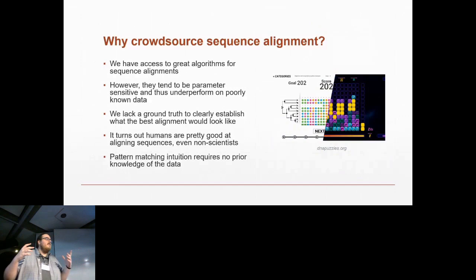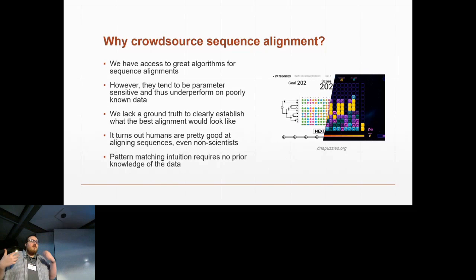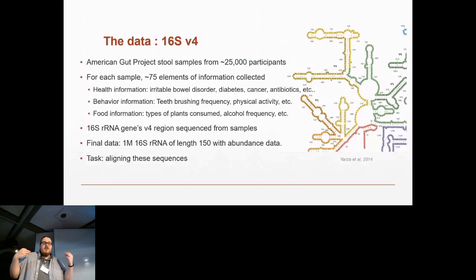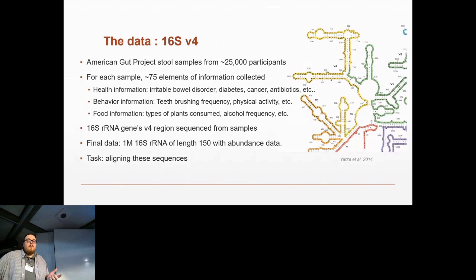To come back on the idea of crowdsourced sequence alignments: the core idea we're working with is that when we work with sequences we know very little about, we're going to struggle to get really high quality alignments from standard algorithms, just because it's very hard to parametrize them due to the absence of ground truth. From stool samples from about 25,000 participants, we have about 75 elements of information collected — health information like whether they have irritable bowel, cancer, or diabetes.